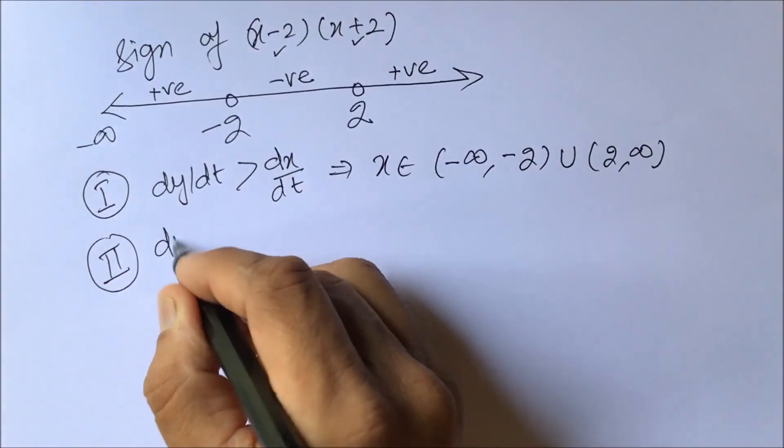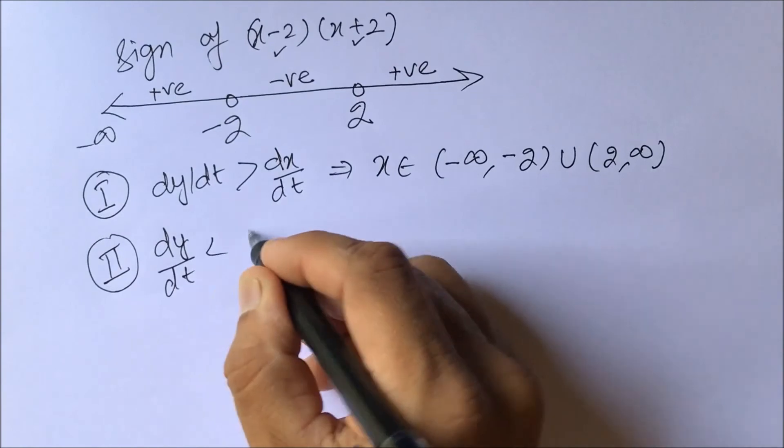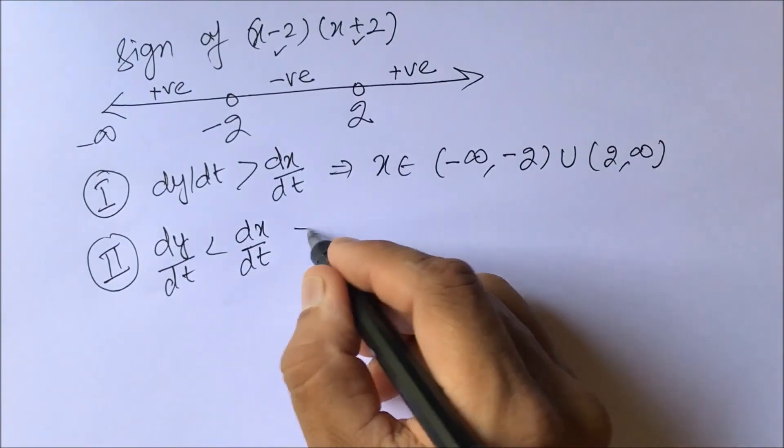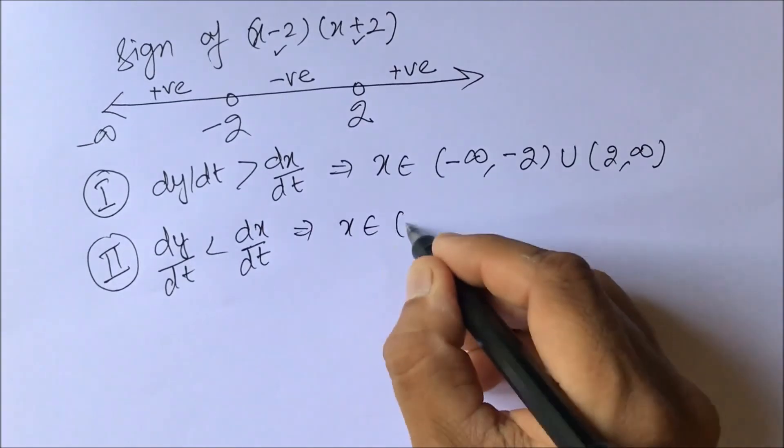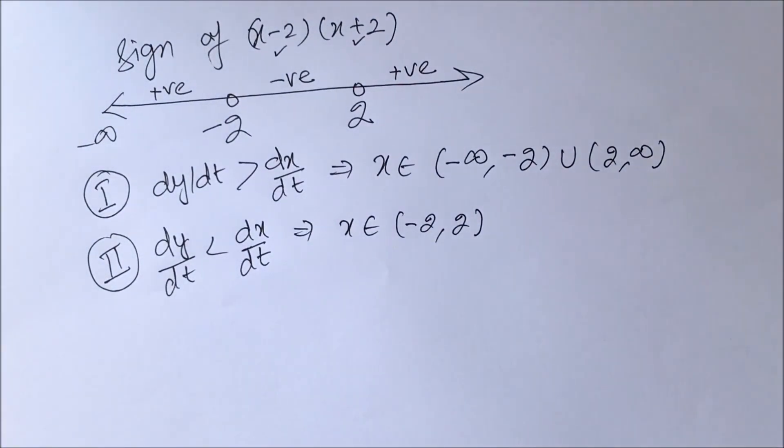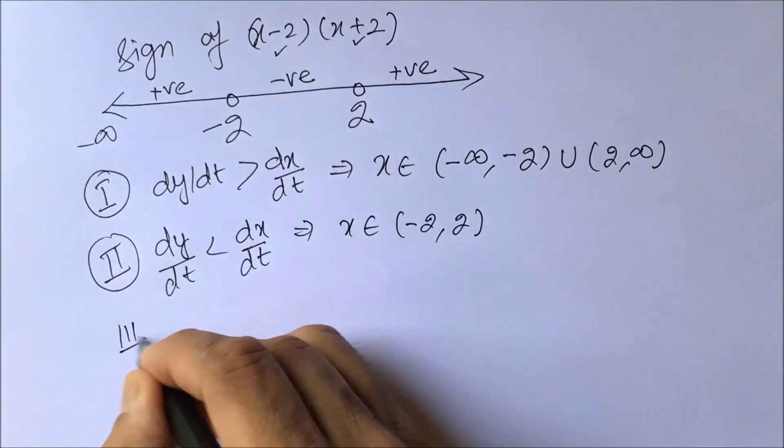Now you could guess that when the x coordinate is changing faster, that is dy/dt is less than dx/dt, this is the region where x is belonging to the open interval of minus 2 to 2.